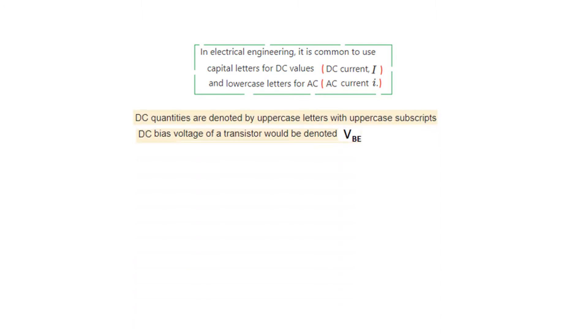DC quantities are denoted by uppercase. Like voltage between base and emitter, if it is for DC, then it will be written as capital V, capital B, and capital E, VBE.